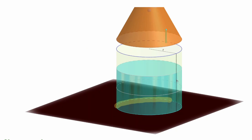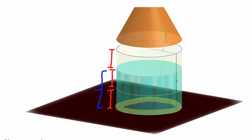Let's start by considering a cylinder where the base is a circle and the volume is divided into three equal sections. Notice that two out of these three sections have already been filled in with water, and this one third is empty.